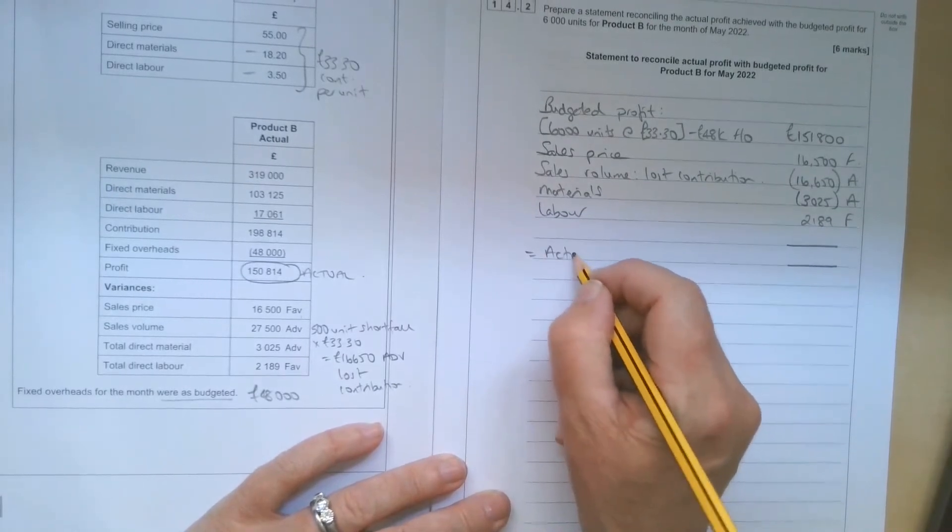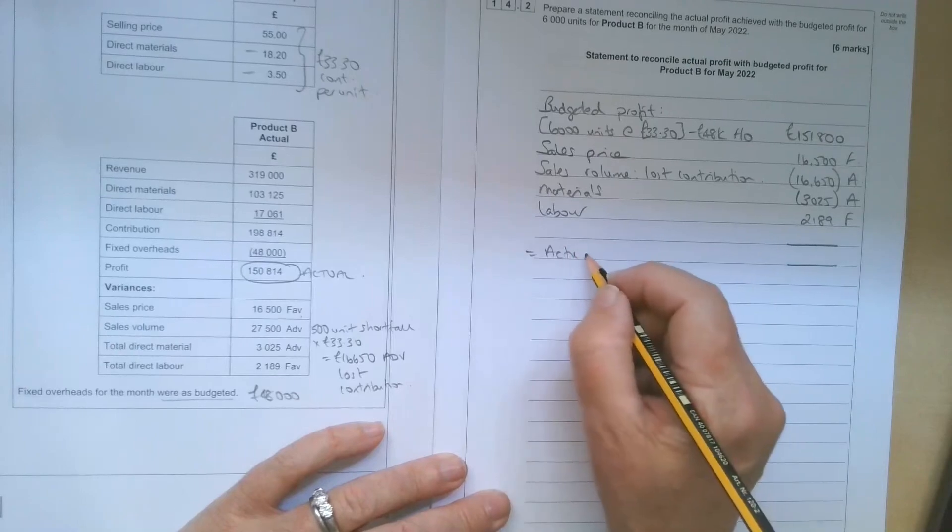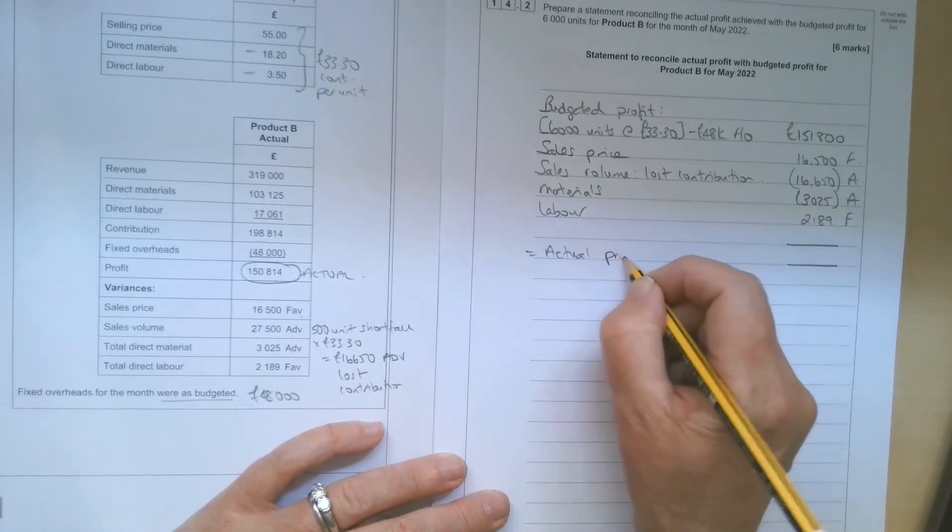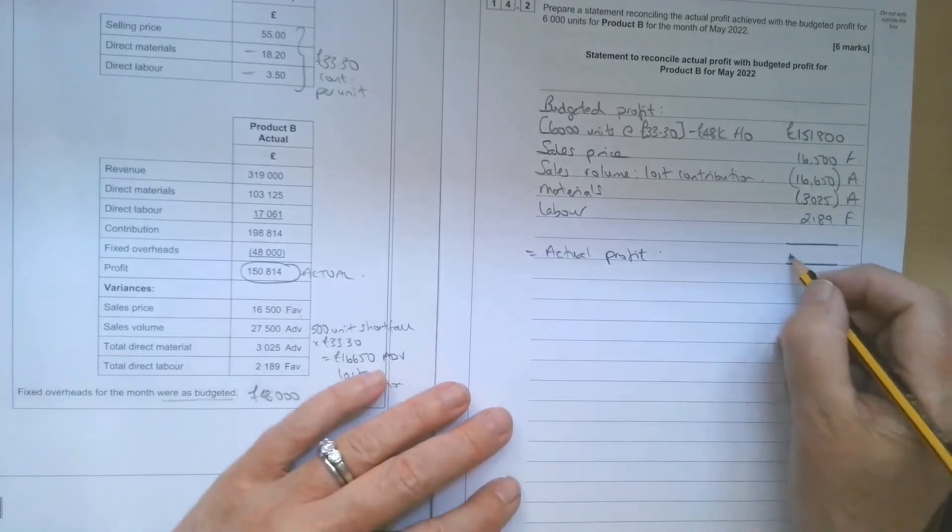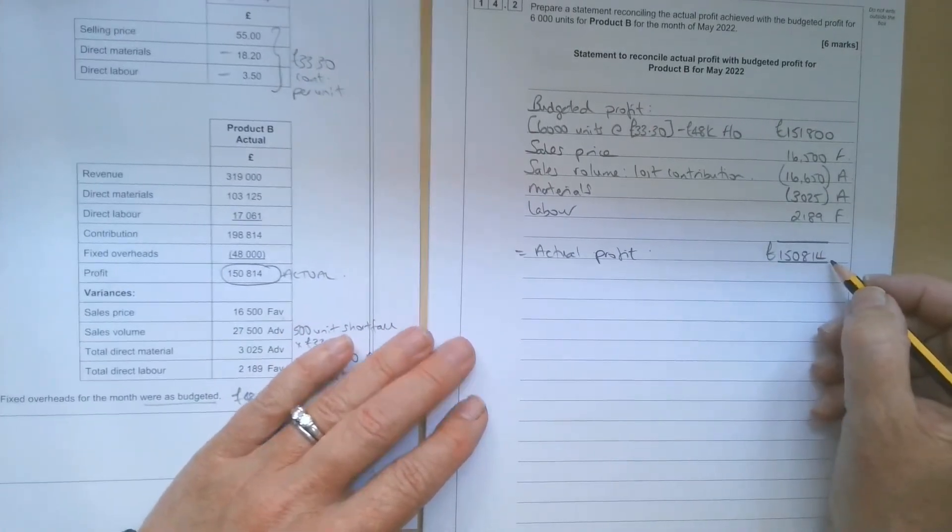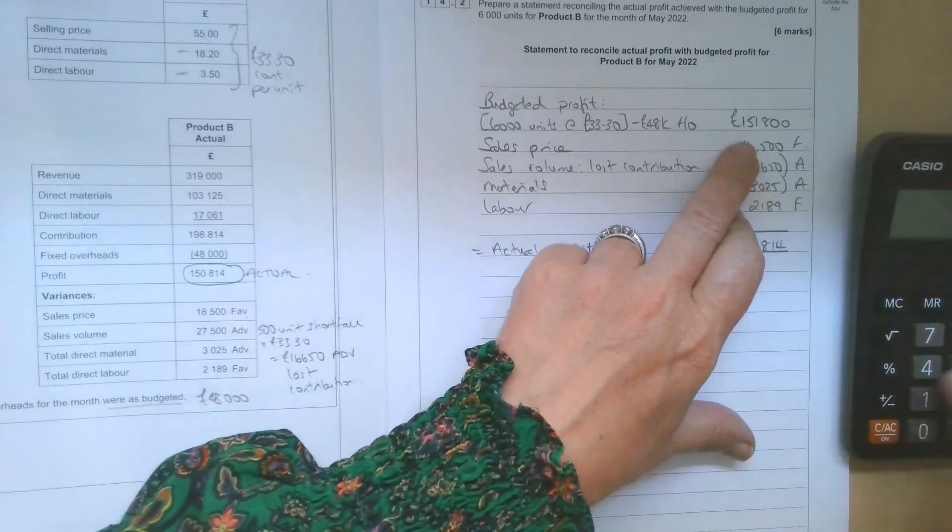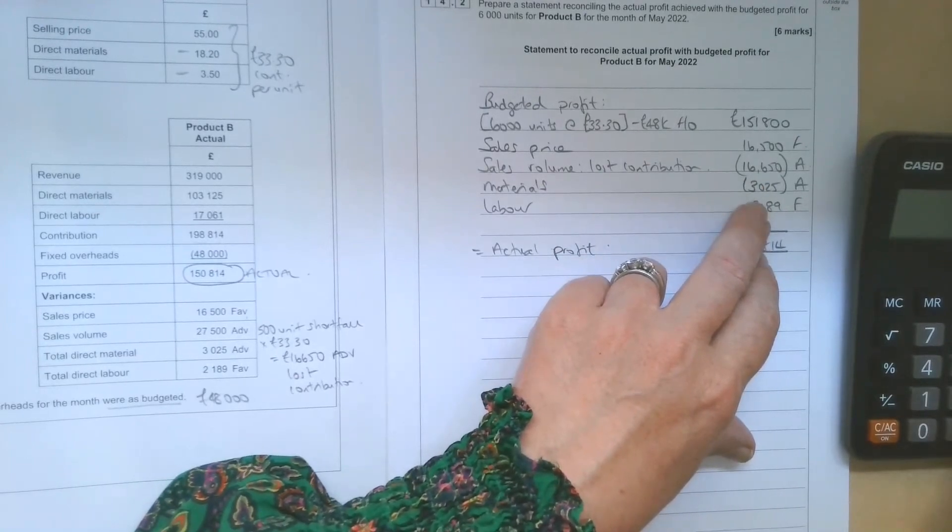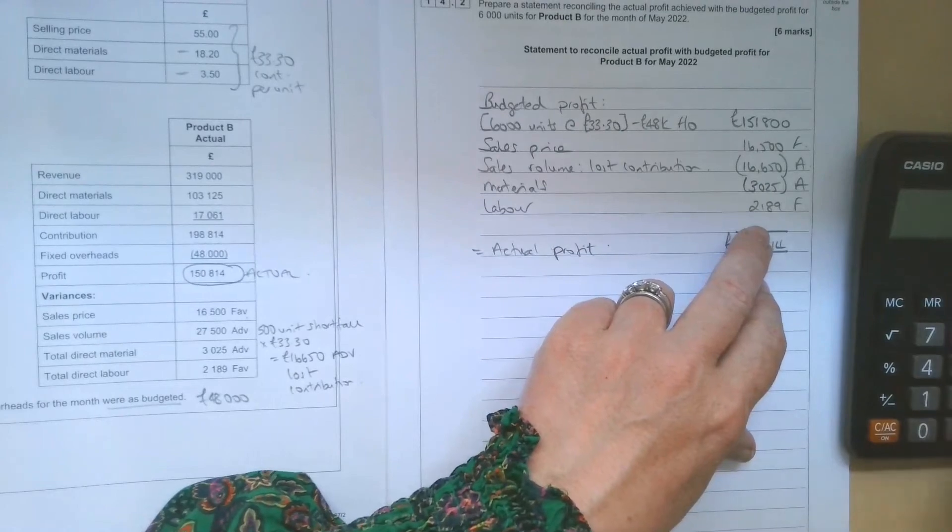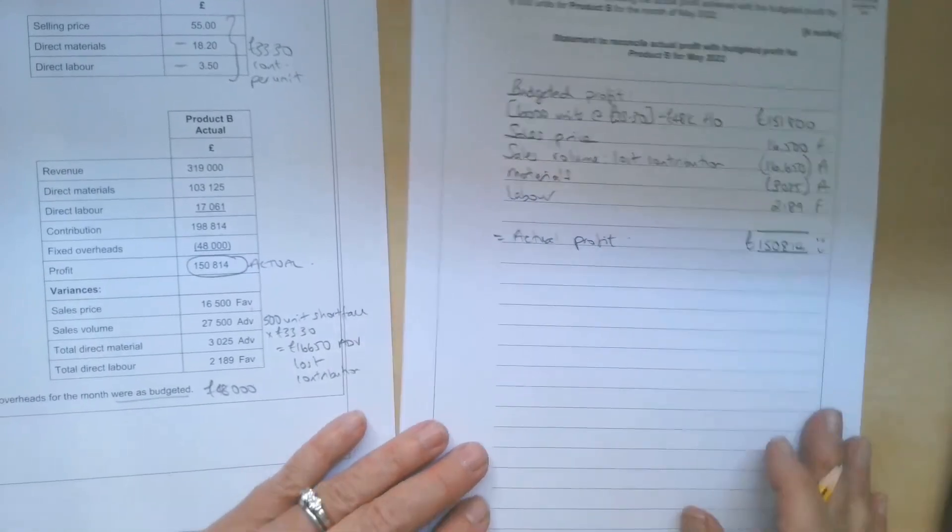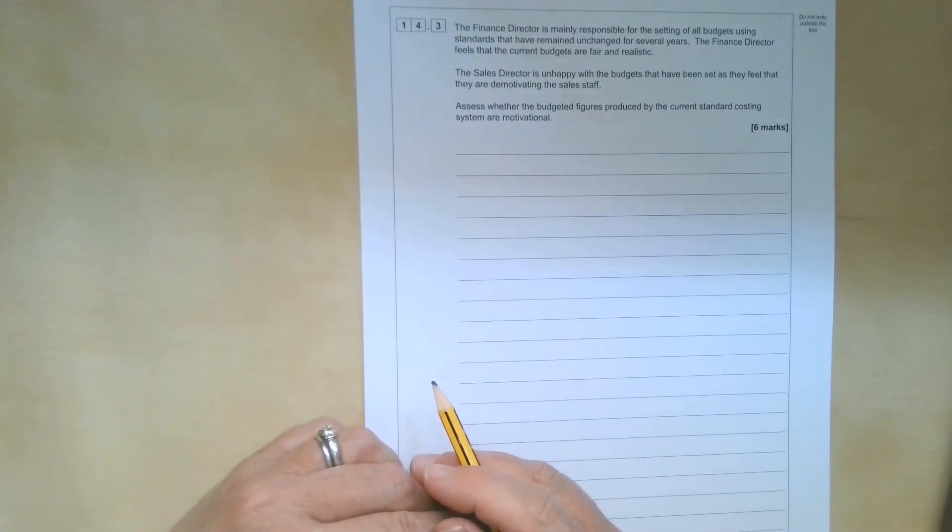So fingers crossed, that should equal the actual... I had a momentary lapse of reason there. So the actual profit, which we're given here, is £150,814. So luckily we don't have to do fixed overhead variances. We'll save those for when you reach the dizzy heights of AAT level 4 and beyond. Now let's just check that the maths works. So we're starting with £151,800, adding the £16,500 favourable variance, taking away the £16,650 adverse, the £3,025 adverse, and then adding the £2,189. And there we go. That now reconciles. I'll give myself a little smiley face there. And that's 14.2 completed, another six marks. So I'll stop talking and let you get on. Have a go at these questions. Thanks very much for watching.